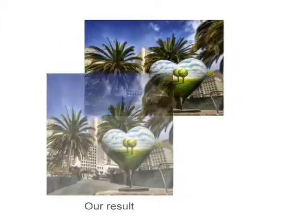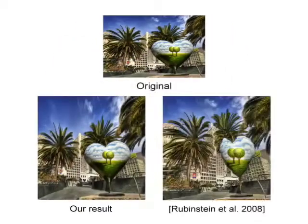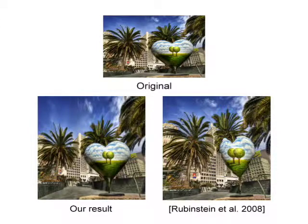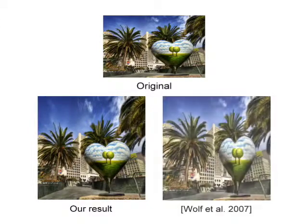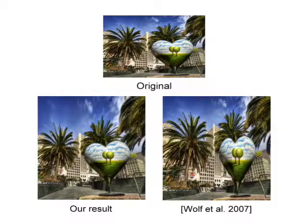Here we show some comparison results with previous methods. Our method produces smoother results than improved seam carving, which causes noticeable discontinuity. Comparing with Wolff and others' warping method, our optimized scale and stretch method propagates distortion in all directions, and thus better preserves the aspect ratios of prominent objects.